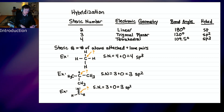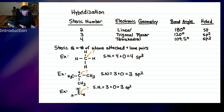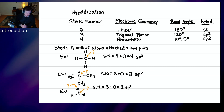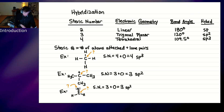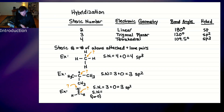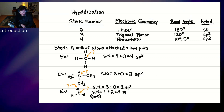Not just carbon can hybridize — any element with s and p orbitals can. For the oxygen in formaldehyde: one atom attached (the carbon, remembering not to count the double bond twice) plus two lone pairs equals steric number 3. So the oxygen is also sp2 hybridized.